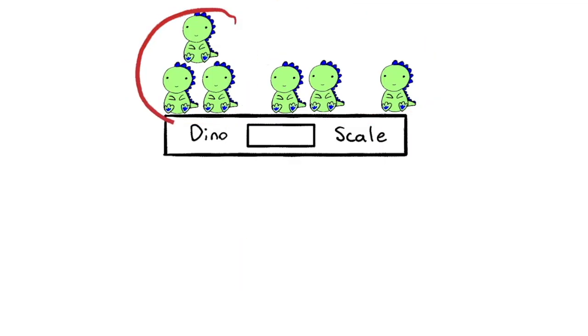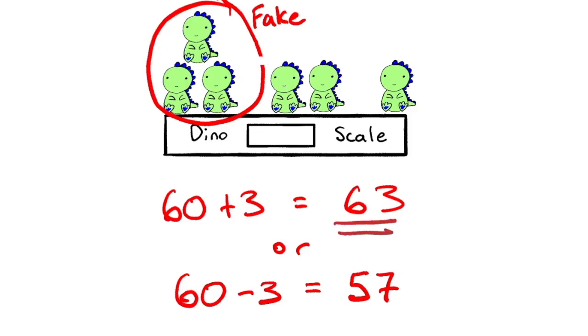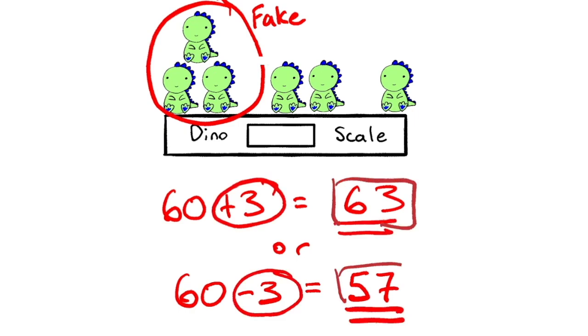So for example, if these three dinosaurs end up being a part of the fake family, the scale will either read 63 because they're three heavier dinosaurs or 57 because there's three lighter dinosaurs. So if we know that the scale reads 63 or 57, these three are the fake ones.